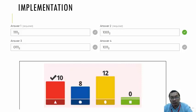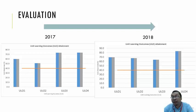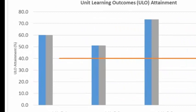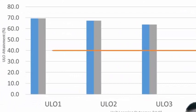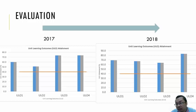To evaluate whether Kahoot has a good impact, I looked at learning outcome attainments. Here are two sets of learning outcome attainments from 2017 and 2018. There is a clear improvement between the two years. Learning outcome 1 went from 60% in 2017 to almost 70% in 2018. Learning outcome 2 increased from 50% to 68%. Learning outcome 4 improved from 72% to 82%. We can set aside learning outcome 3 for now, as most of its marks come from lab assessments.